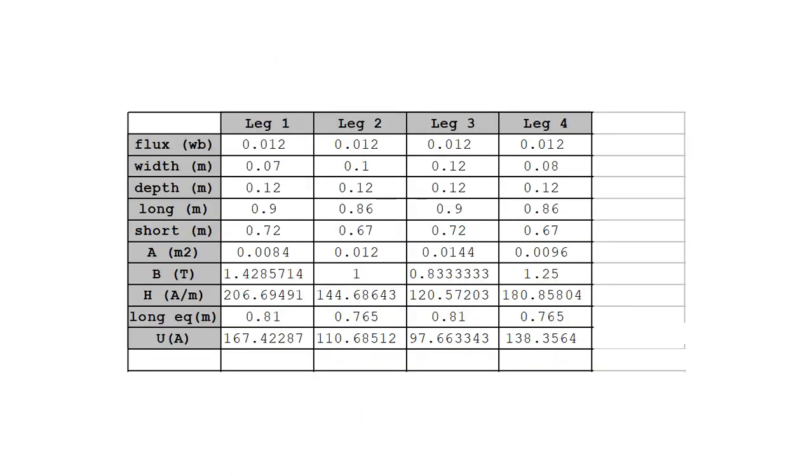I have created a table that contains the data for each one of the four legs. And down here at the bottom, we have the magnetic potential drop in each one of the legs. If we add the four magnetic potential drops, H₁L₁, H₂L₂, H₃L₃, and H₄L₄, we get the total MMF applied by the coil.